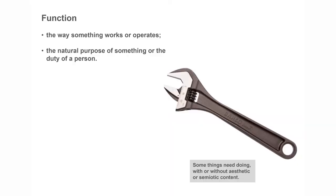The most obvious one — that in UX, computer science, and design we're always focused on — is function: the natural purpose of something, the way something is done. As designers we know that when focusing on what we're trying to achieve, some things just need to be done. Sending an email by pushing send just needs to happen. Certain things are purely practical and the simplest way to do it is best — semiotic content or deep meanings isn't really much of an issue.